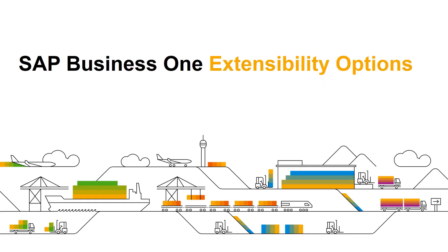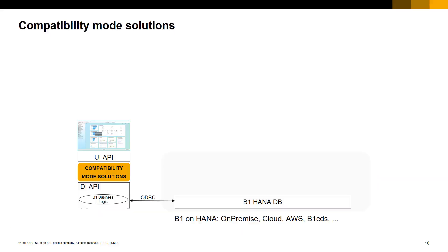The first extensibility option shown here is the traditional method of integration with SAP Business One. Using the SAP Business One Software Development Kit and the DI and UI API, the solution is implemented with the SAP Business One client. This method of extensibility can still be used today for SAP Business One for SAP HANA, SAP Business One Cloud hosted by a partner, on-premise SAP Business One implementations, as well as SAP Business One Cloud hosted by SAP.